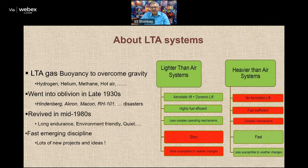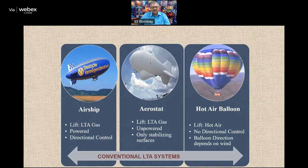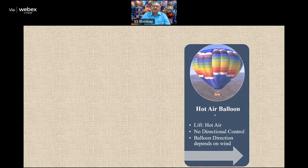LTA systems suffer mainly from two things: being slow and large in size, hence more susceptible to weather changes. Otherwise they score well on aerostatic lift, fuel efficiency, and complexity compared to heavier-than-air systems, which are fast and less susceptible to weather. The three principal LTA systems are the airship, which is fully powered; the aerostat, which is powered only for local applications; and the hot air balloon. Today we are going to look at a balloon.